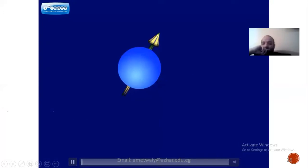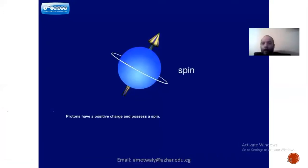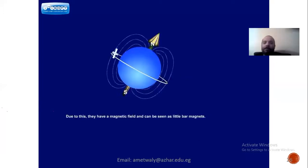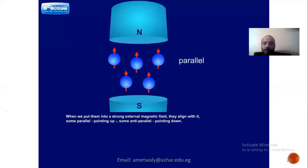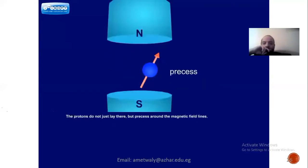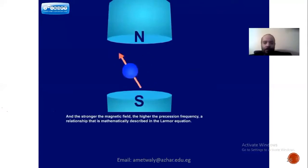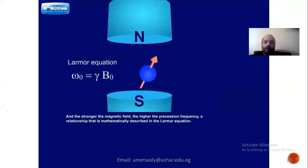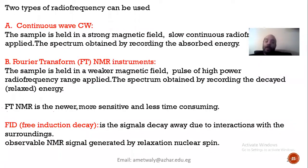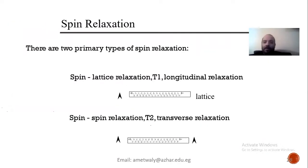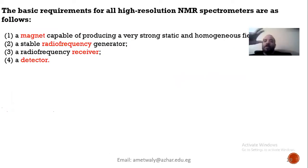Protons have a positive charge and possess a spin; due to this they have a magnetic field and can be seen as little bar magnets. When we put them in a strong external magnetic field, the stronger the magnetic field the higher the precession frequency — this relationship is mathematically described in the Larmor equation. Parallel and antiparallel alignments are possible. This video was talking about MRI — they are the same principle. Two different types of NMR were used: continuous wave in the old one, and Fourier transform in the new one, invented by Richard Ernst.